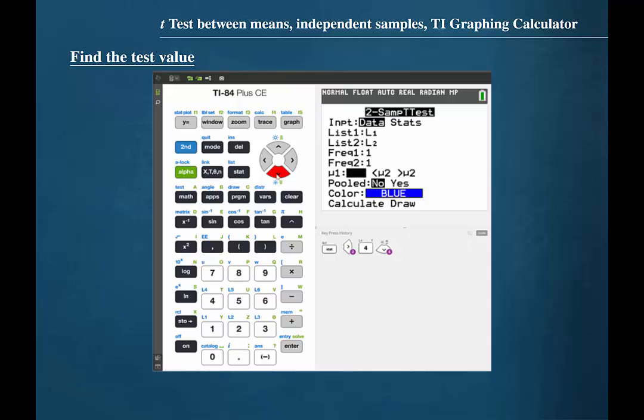Our alternative hypothesis is mu1 less than mu2. So we should highlight that selection and press enter. We are not to assume that the population variances are equal, so at the pooled prompt we should highlight NO and press enter.